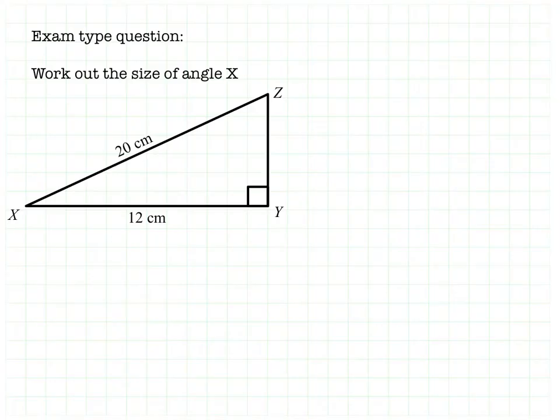So we're going to look at an exam type question. It's not from an exam but it's very similar in structure to the kind of question you see appearing in many exams, and it's work out the size of angle X. A triangle that's X, Y, and Z, and you're given two of the sides: one of them is 20, one of them is 12. So in the second part of this we're going to show how to solve that problem.